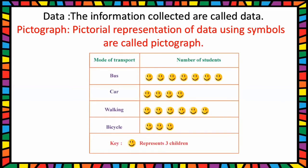Number of students using different types of transport in a school: bus, car, walking, and bicycle. One smiley represents three children. See number of students using bus—seven smileys are there, that means seven times three, twenty-one children are using bus. Next, car has four smileys, that means four times three, twelve children are using car.